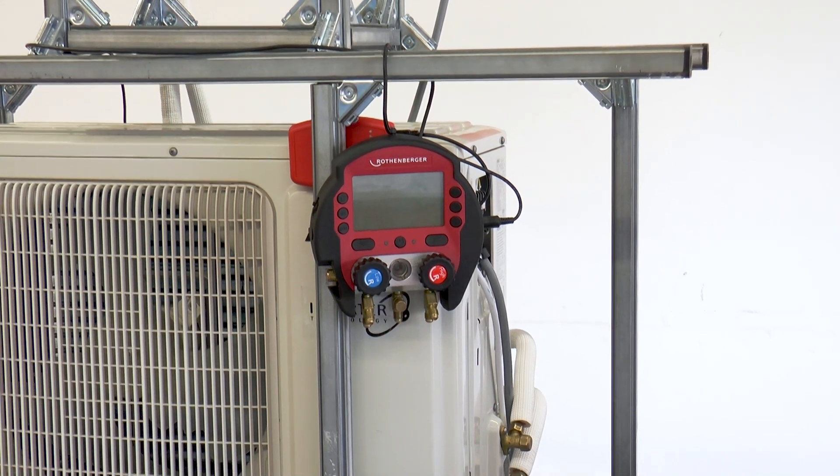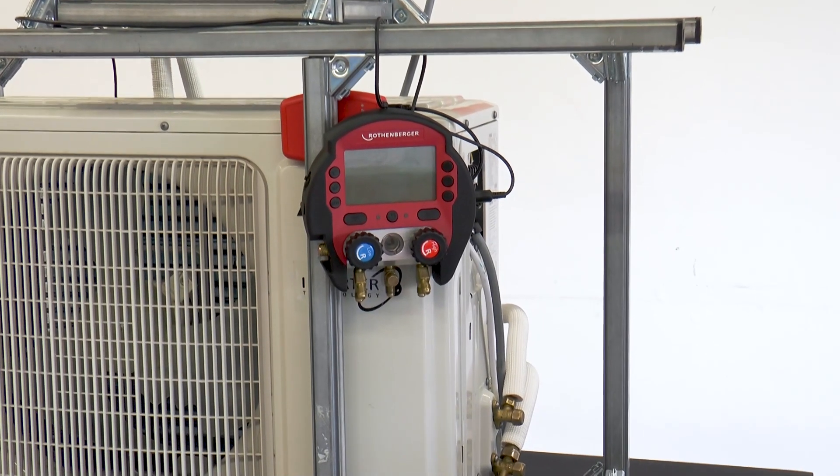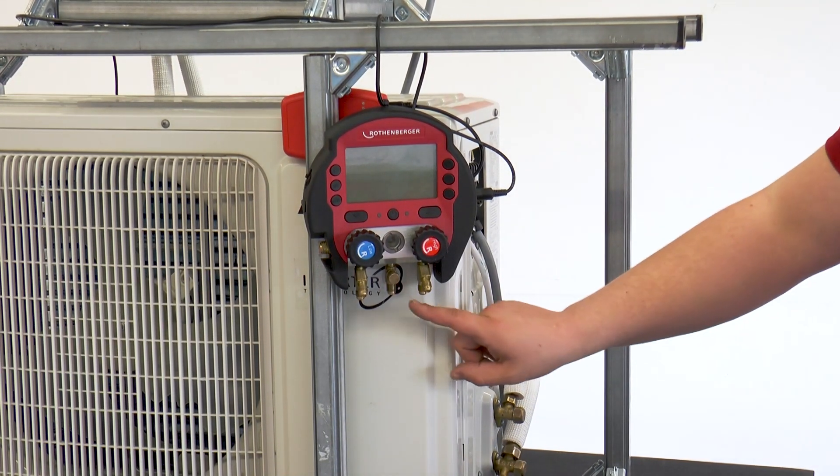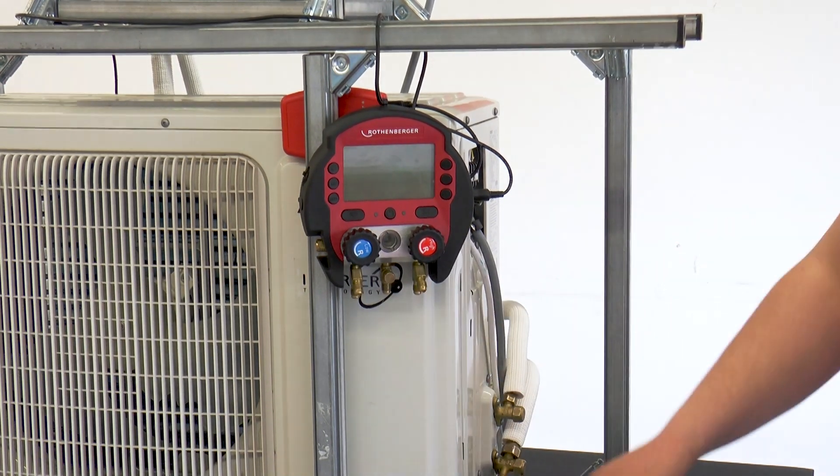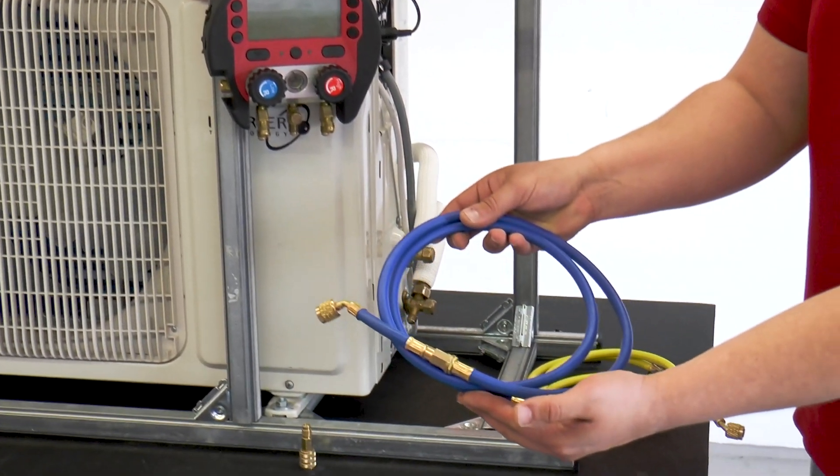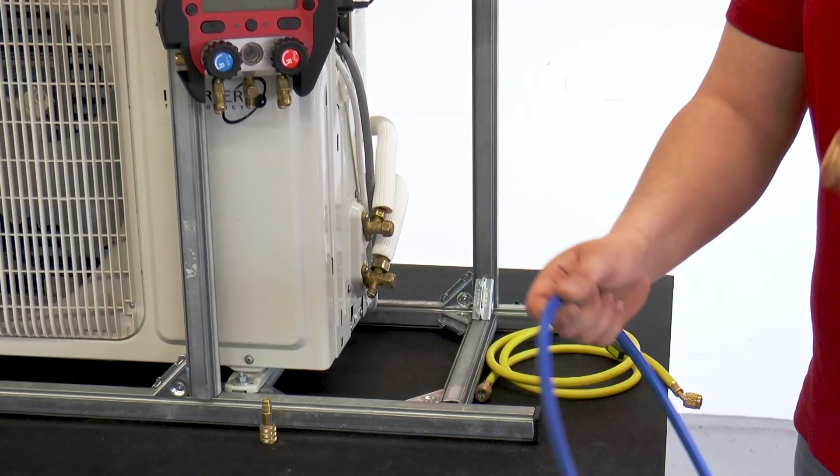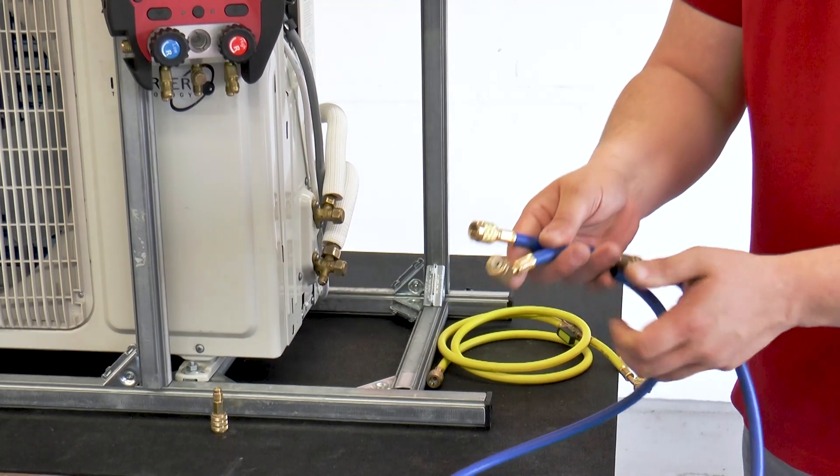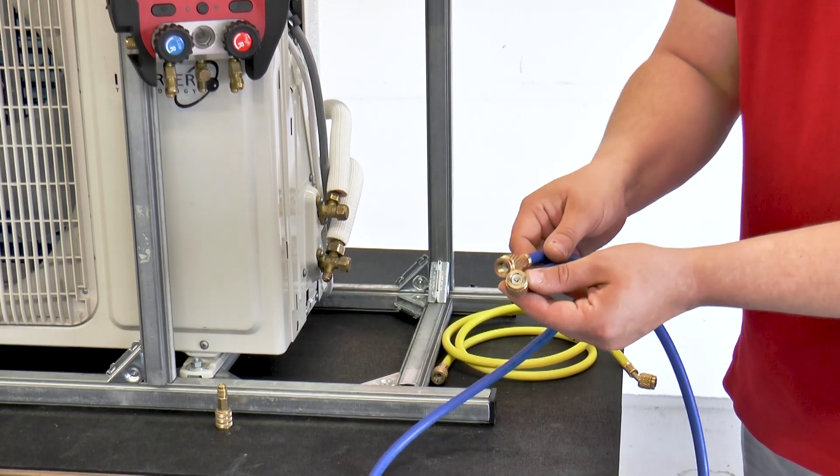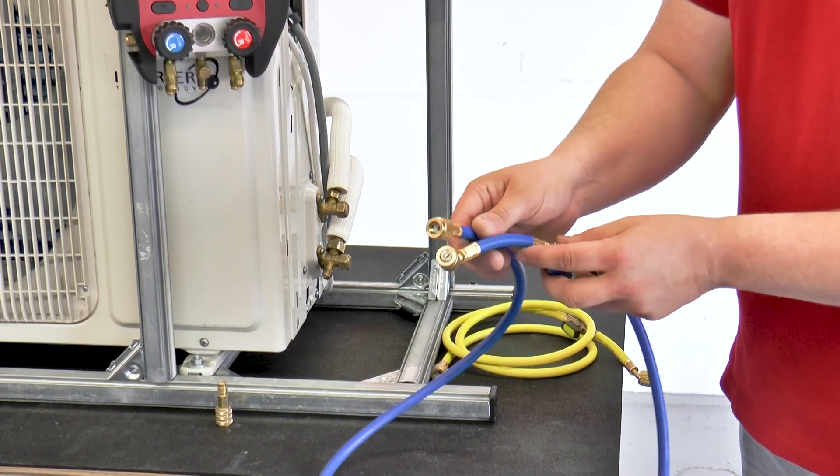When connecting the Roll Cool, it is important to use the hoses. Which hose is used where? Since the Roll Cool has ¼ inch SAE connections, we use ¼ inch SAE hoses. The hose is connected to the low-pressure side of the air conditioner. Therefore, the blue hose is used.